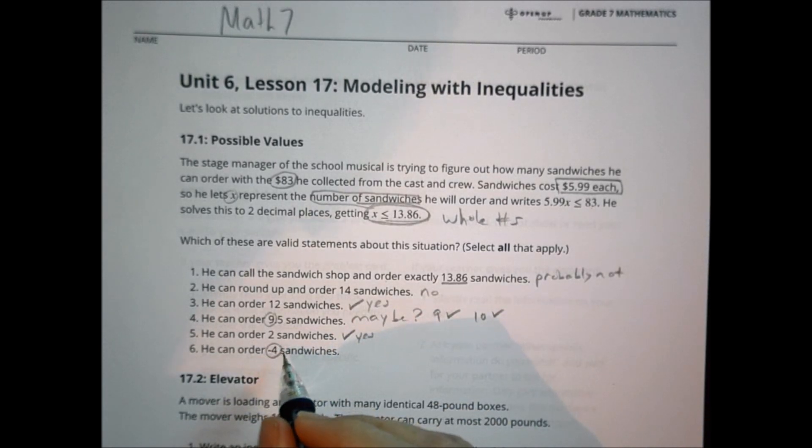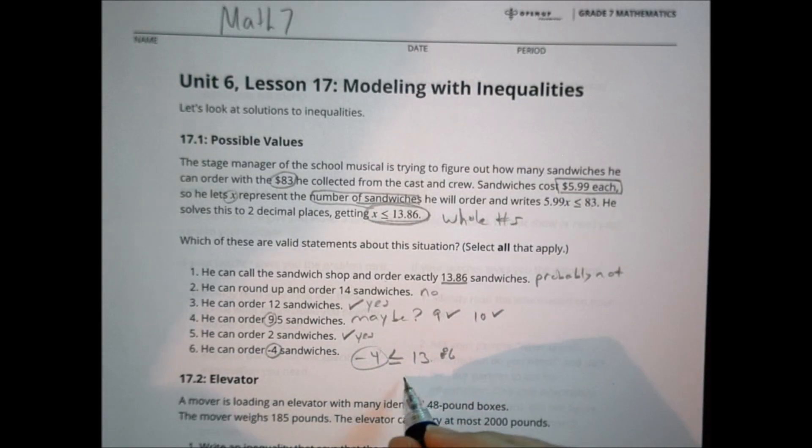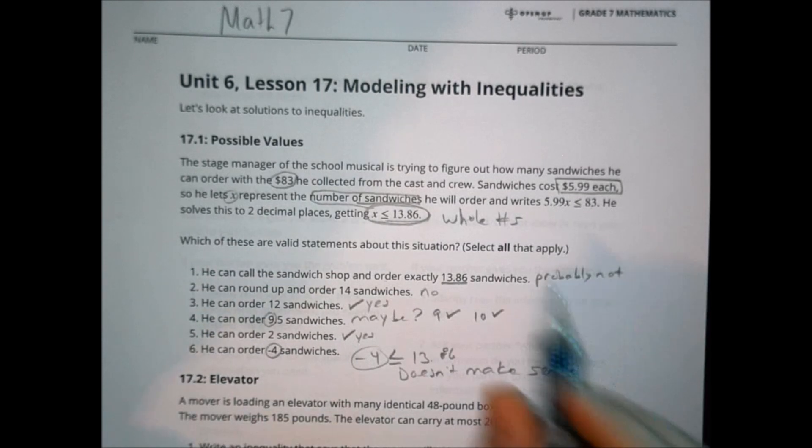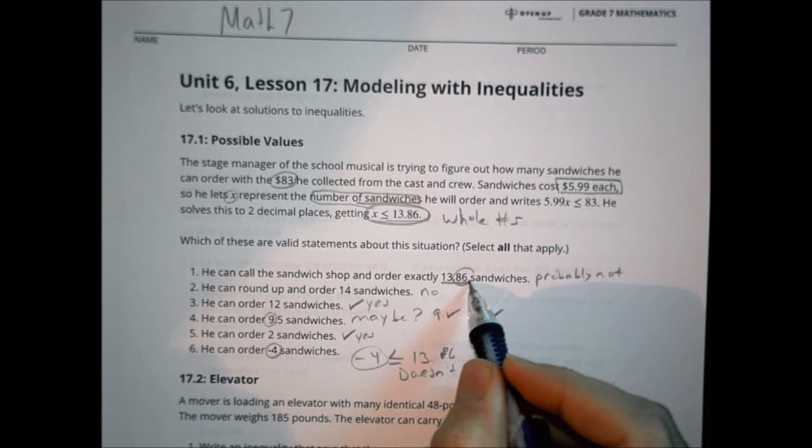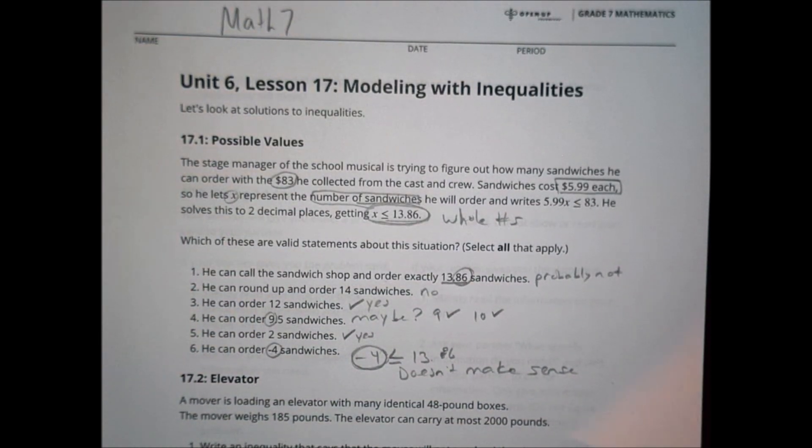Can he order negative 4 sandwiches? Well, while negative 4 is indeed less than 13.86, you can't really order a negative sandwich. It doesn't make sense. That's the key here. It has to also make sense to what you're doing. So sometimes with inequalities, while you might get a solution, you have to then use some logic to say, does it actually make sense? Could it realistically happen?